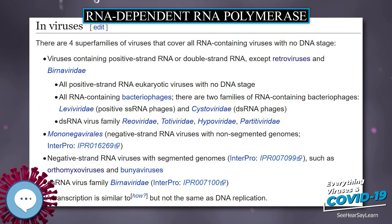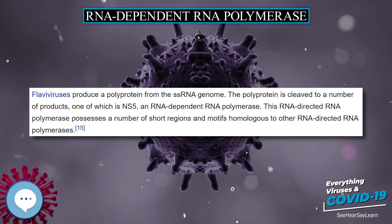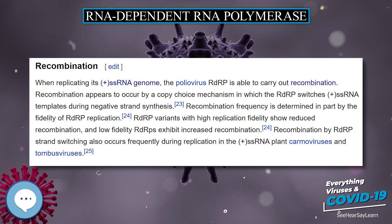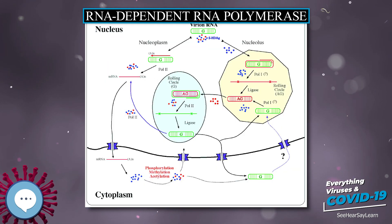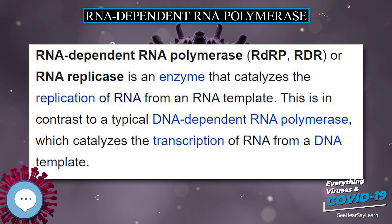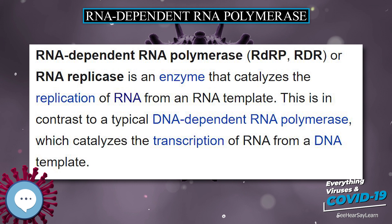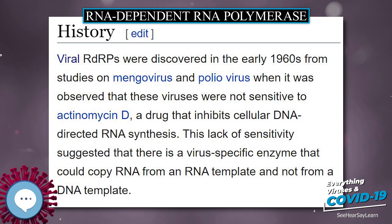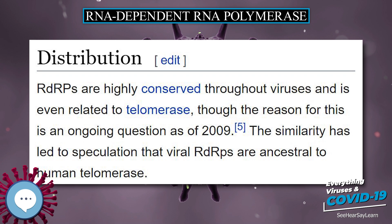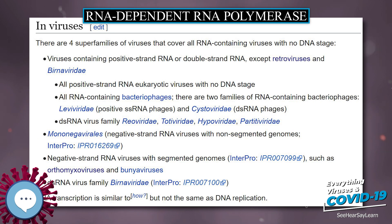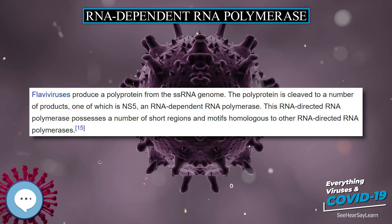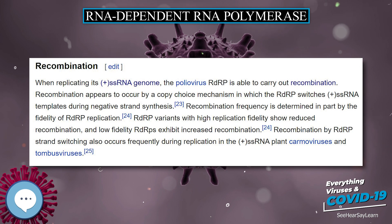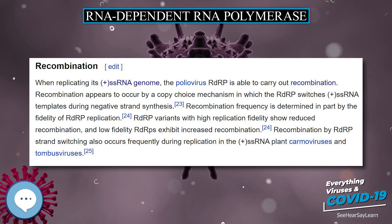In Viruses: There are four superfamilies of viruses that cover all RNA-containing viruses with no DNA stage. RNA transcription is similar to but not the same as DNA replication. Flaviviruses produce a polyprotein from the positive-sense genome. The polyprotein is cleaved to a number of products, one of which is NS5, an RNA-dependent RNA polymerase. This RNA-directed RNA polymerase possesses a number of short regions and motifs homologous to other RNA-directed RNA polymerases. RNA replicases found in positive-sense RNA viruses are related to each other, forming three large superfamilies. Narnavirus RNA replicase is unique in that it lacks motif C (GDD) in the palm. Mononegaviral RDRP (PDB: 5A22) has been automatically classified as similar to plus-sense RDRPs, specifically one from pestivirus and one from Leviviridae.